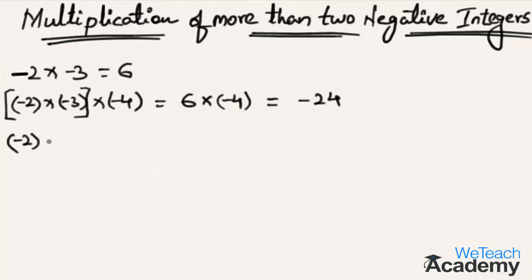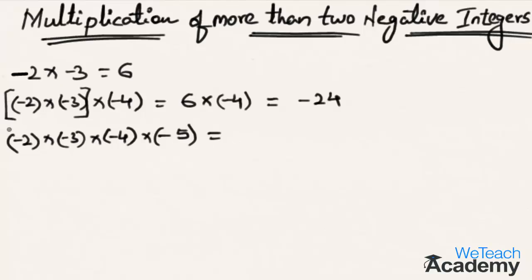What will be the product if you multiply four negative integers: minus 2, minus 3, minus 4, and minus 5? You can solve this with pairs: minus 2 multiplied by minus 3 is 6, and minus 4 multiplied by minus 5 is 20. So 6 multiplied by 20 is 120.